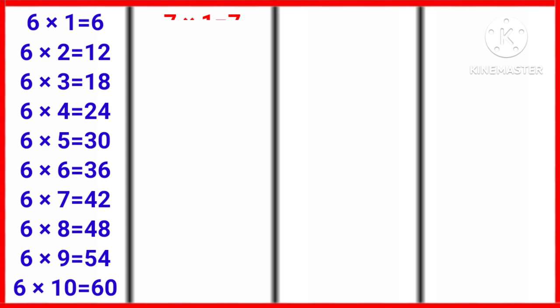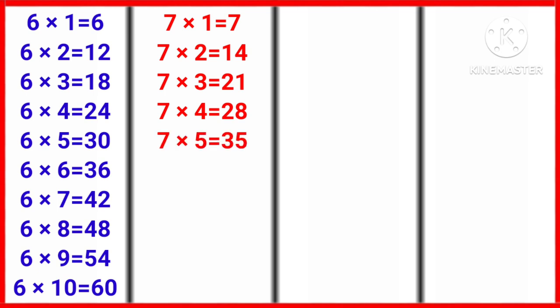7 1s are 7, 7 2s are 14, 7 3s are 21, 7 4s are 28, 7 5s are 35.